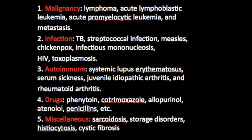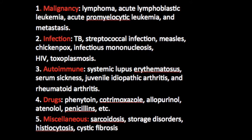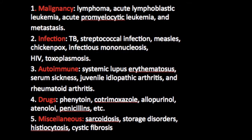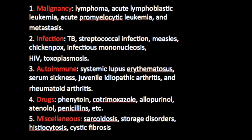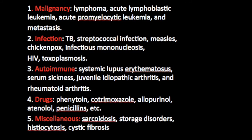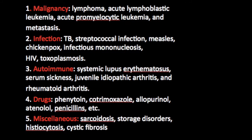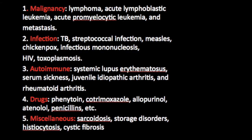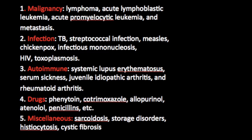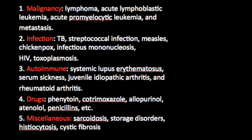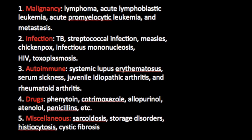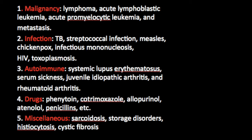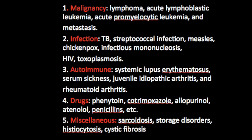HIV patients and other autoimmune conditions, as well as certain drugs, can also give rise to this condition. And we can also of course never forget sarcoidosis. Amongst these, the few conditions we need to differentiate and diagnose are tuberculosis, lymphoma, sarcoidosis, and metastasis.